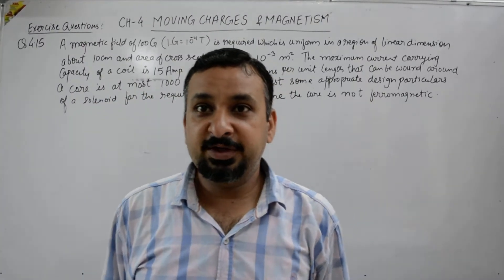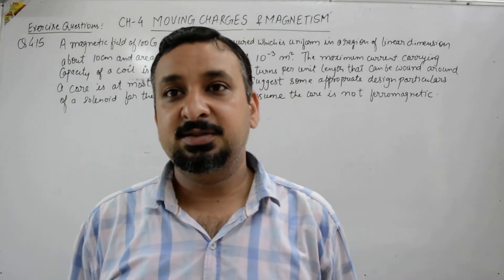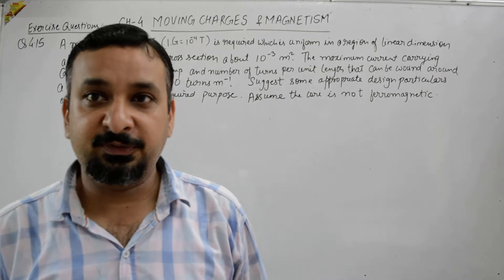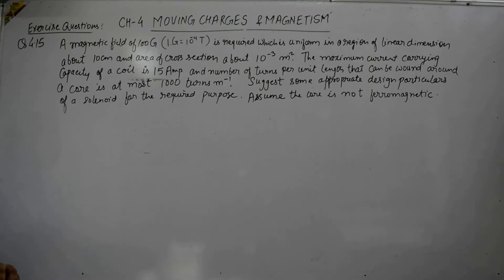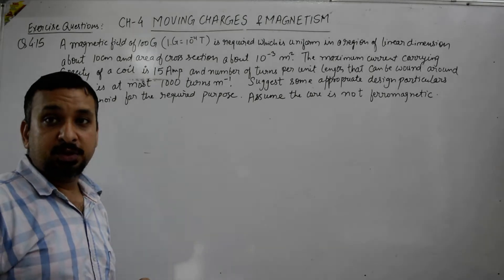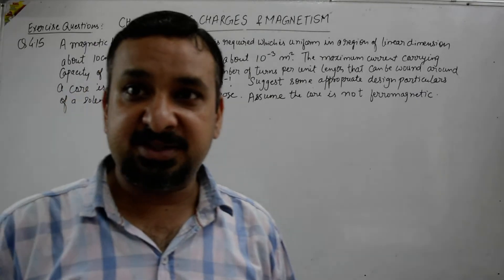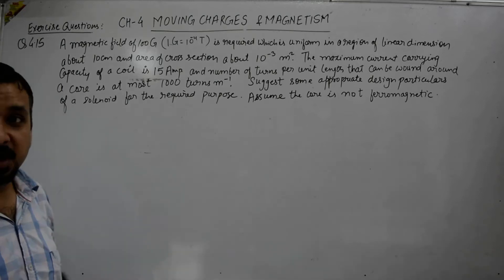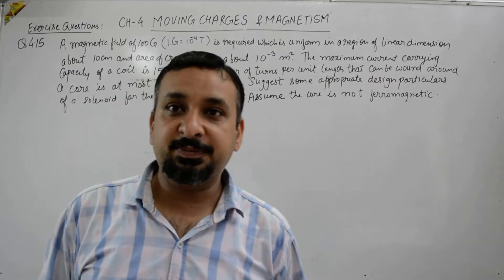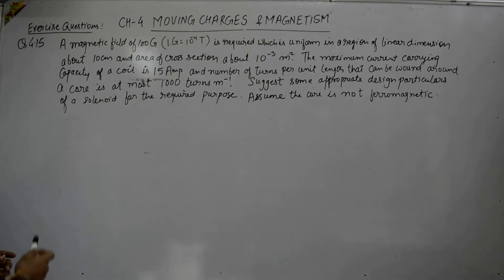Hello, good evening students. Welcome to our class. Today we will discuss the numerical section of Chapter 4, that is magnetic effect of current and moving charges in magnetism. The question in front of you is taken from the NCERT textbook — question number 4.15, from the chapter on moving charges and magnetism.